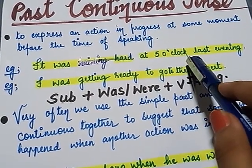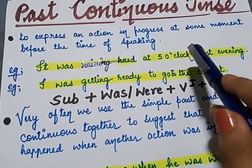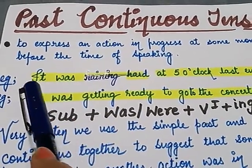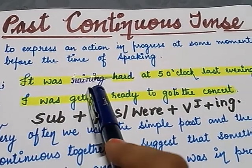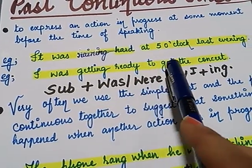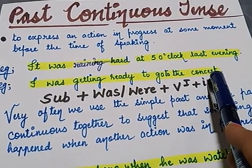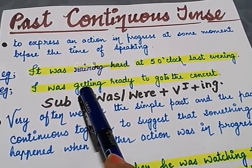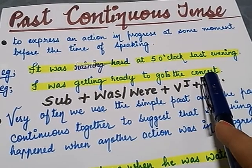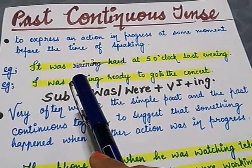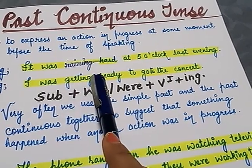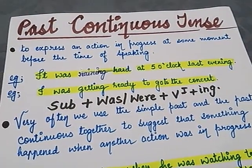You are speaking now, but before speaking it was in progress. So whenever that action is in progress before the time of speaking, that will be in past continuous tense. For example: 'I was getting ready to go to the concert.' Again, at the time of speaking, this action was in progress. Please see that you have to follow this syntax: subject, then the helping verb, then verb first form plus -ing, then the object or other information.